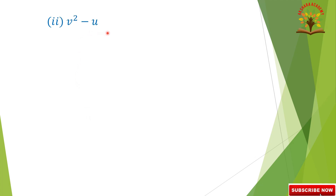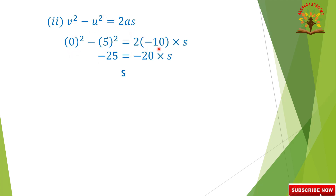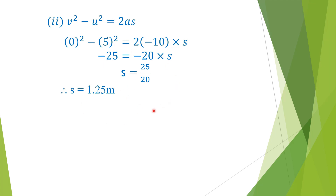Next, using V square minus U square equals 2AS: 0 minus 25 equals minus 20 into S, so S equals 25 by 20, giving distance S equals 1.25 meters. This covers the answers from 16 to 20. Thanks for watching this video.